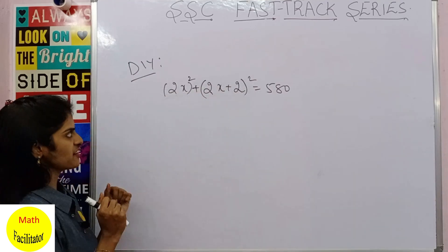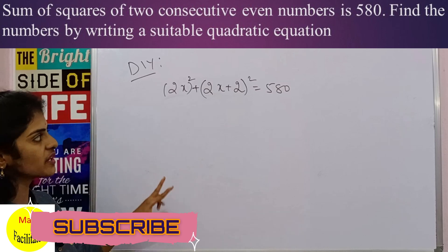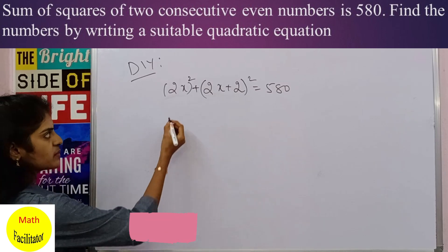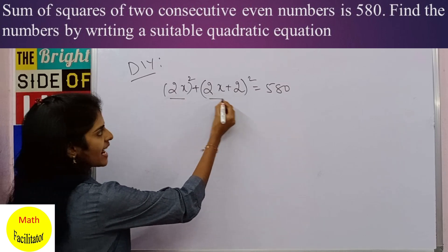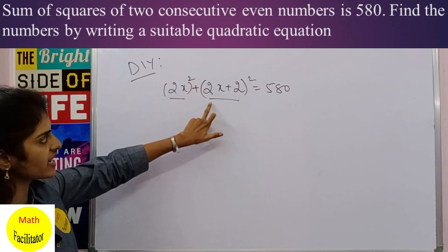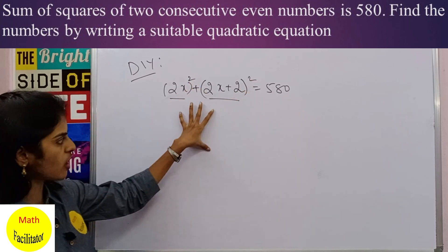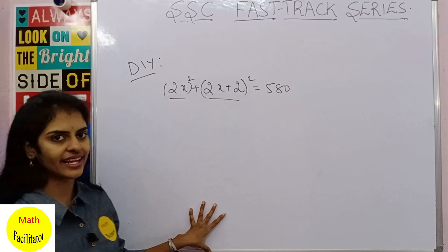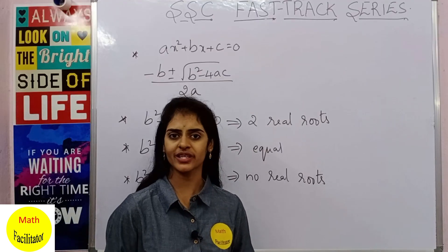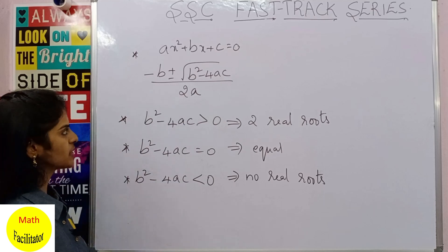Now it's your time to do the DIY: the sum of the squares of two consecutive even numbers is 580. Let the even numbers be 2x and 2x + 2. Solving this you will get the numbers. Those are all the important previous year questions we have discussed.